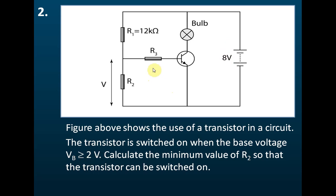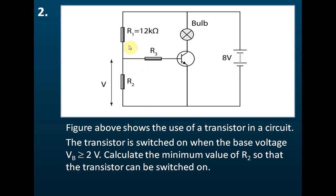The question tells us that if the potential difference across the base equals two or more than two volts, then current can flow in the collector circuit. So we need to calculate the minimum value of R2 so that the transistor can be switched on — meaning R2 must produce a voltage of 2 volts. These two resistors share 8 volts according to their resistance.